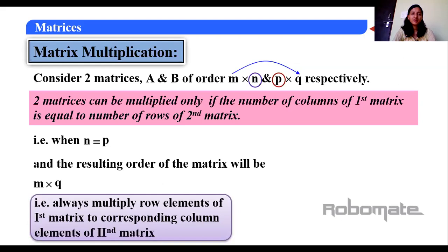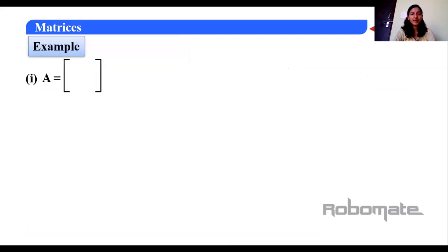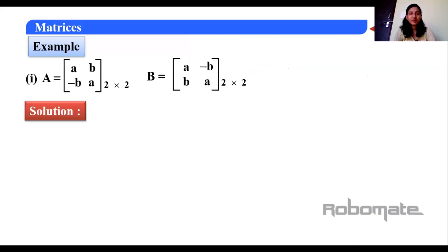We need a lot of practice for matrix multiplication, then the concept will be clear. Let's do some examples. A matrix is given with elements A, B, -B, A — its order is 2×2. And matrix B has elements B, A, -B, A — also order 2×2. The order is the same, but we have to check that the number of columns of the first matrix equals the number of rows of the second matrix.